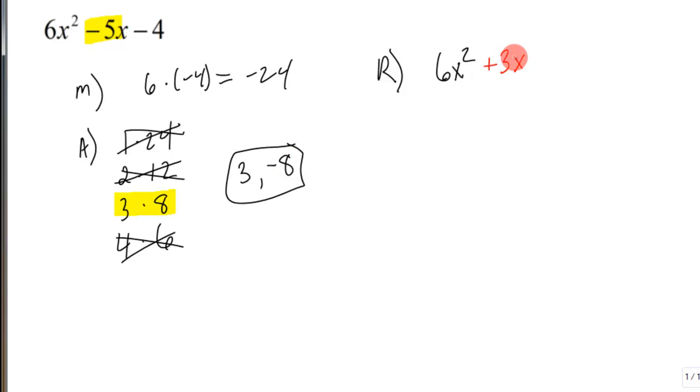Plus 3x minus 8x and then minus 4. So what I did is I took the negative 5x and split it into positive 3x and negative 8x. Ripping apart the middle term.